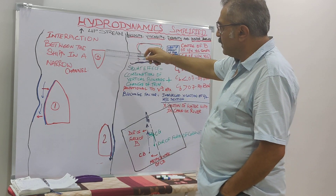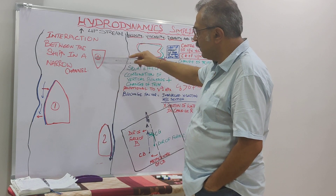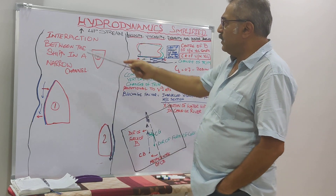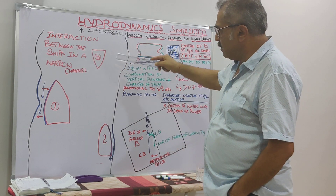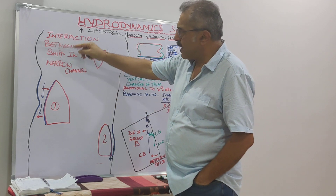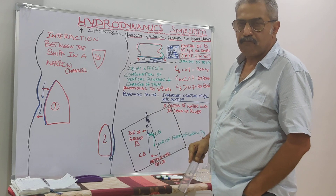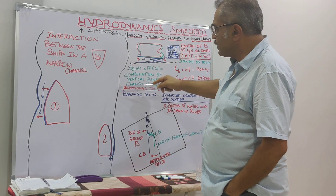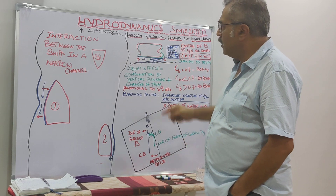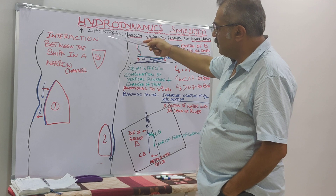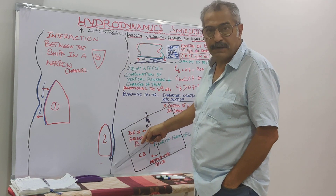Please pay attention — I have drawn three ships, numbered one, two, and three: interaction between ships in a narrow channel. What I have drawn here with the black banks is a river. The banks are not in a straight line; they are very topsy-turvy. This being the upstream and this being the downstream, as shown by the arrows.